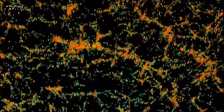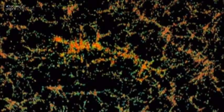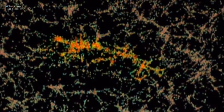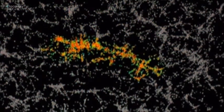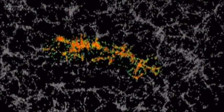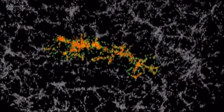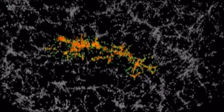But pull back even more and we see that these superclusters are connected into structures called filaments. SDSS has found one that's 1.4 billion light-years across. It's called the Great Sloan Wall, and it's the largest single structure ever discovered in the history of science.